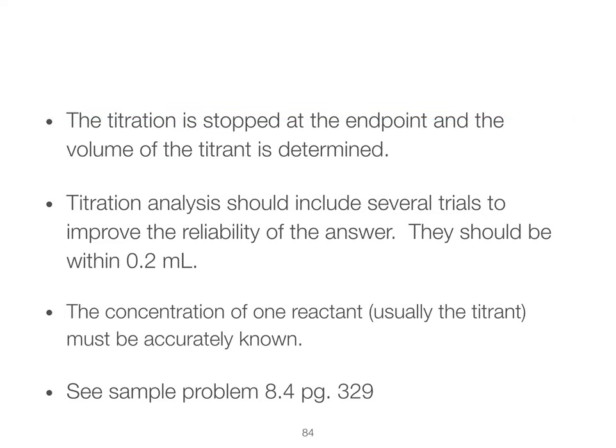We stop the titration at the end point and figure out the volume of the titrant we used, but we don't start doing the calculations yet — I'll show what those calculations look like in another video. Once we've done that once, we get another beaker of sample and do it again. We do this because we are human and prone to error. In good experimental design, we do things to minimize those errors by doing the titration over and over, independently — we ignore the volume we got last time and simply stop again when we see it's hit the end point.